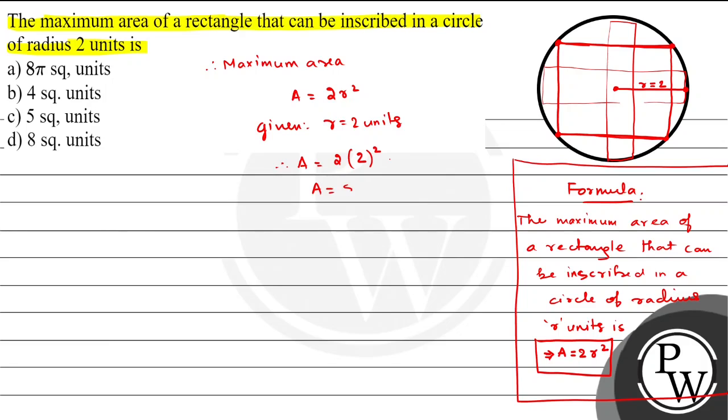So this will be 2 × (2)² = 2 × 4 = 8 square units. This is the maximum area of a rectangle that can be inscribed in the circle.